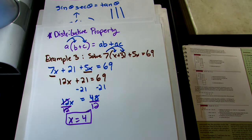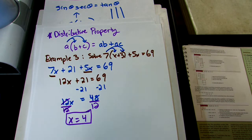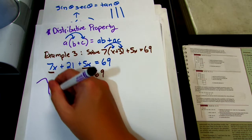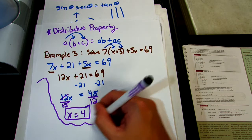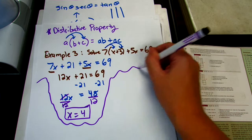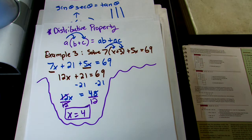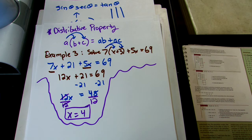Let's talk about when the distributive property gets complicated — specifically when you're distributing a negative. I'm going to show you an example where you actually have to distribute a negative.